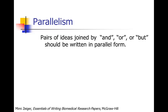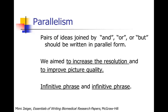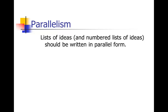Here's another example of pairs of ideas joined by 'and,' 'or,' or 'but' needing to be in parallel form. You would say: 'We aim to increase the resolution and to improve picture quality.' Notice we've got 'and' connecting those two ideas, and they're both an infinitive phrase — infinitive phrase and infinitive phrase. You have to be careful when you've got pairs of ideas like that to make sure they're in parallel form.